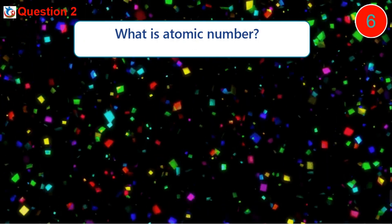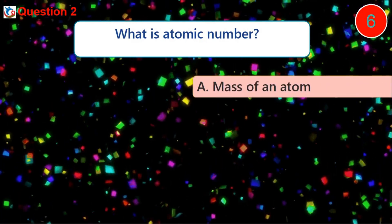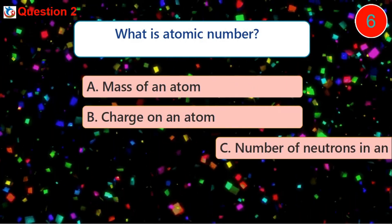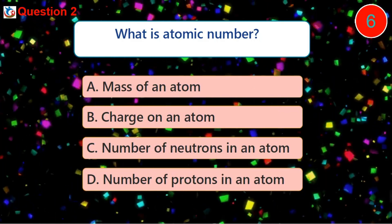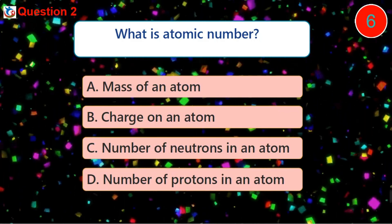Question 2. What is atomic number? A. Mass of an atom B. Charge on an atom C. Number of neutrons in an atom D. Number of protons in an atom.